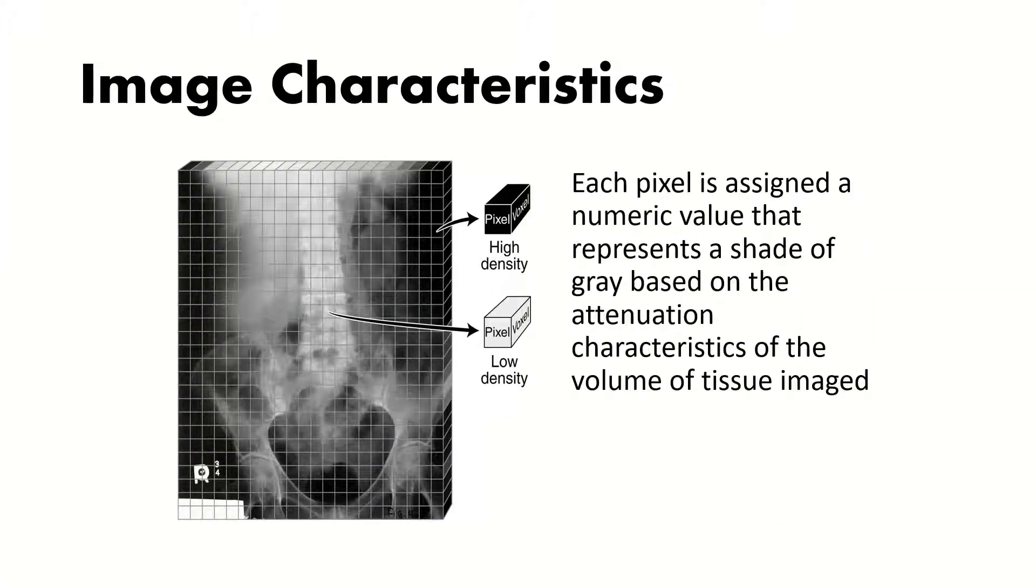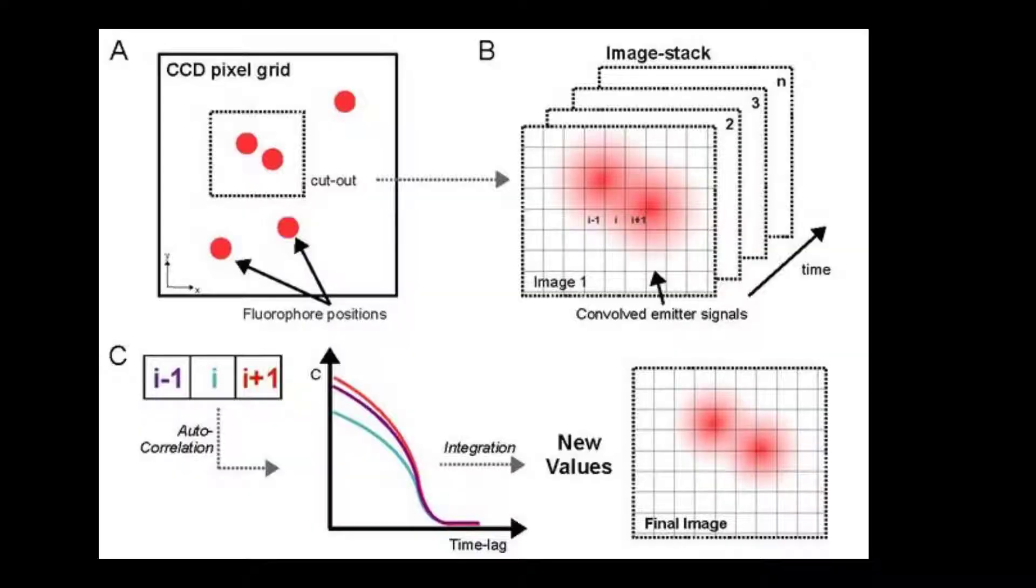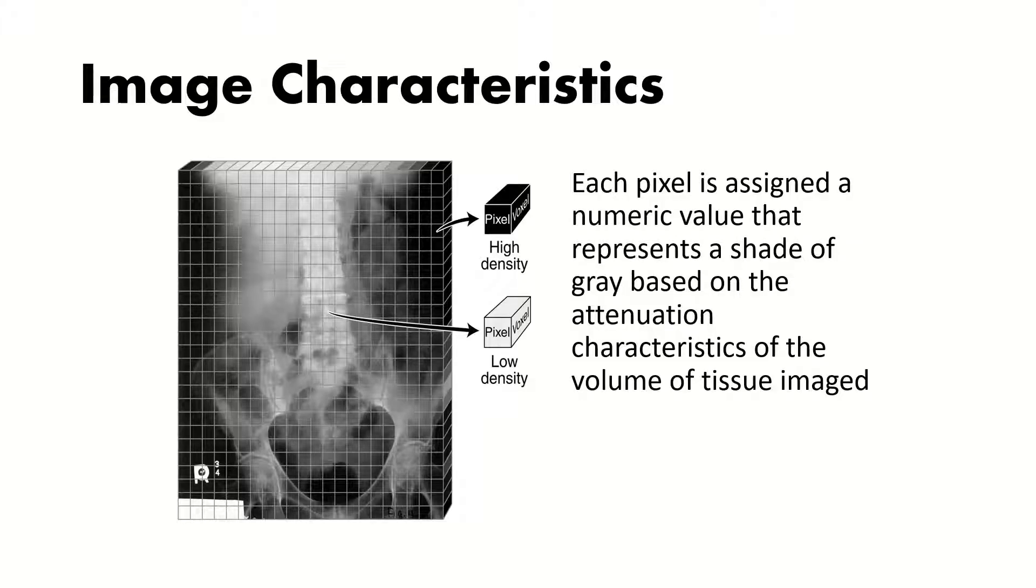Medical images are comprised of a matrix of pixels. The pixel is a representation of a specific area in its height and its width. The voxel is the third dimension, or depth. It's the amount of data that we're collecting in a specific area. Each pixel is assigned a numeric value that represents a shade of gray based on the attenuation characteristics of the volume of tissue imaged or a specific color. Each pixel can only be one shade of gray or one color.